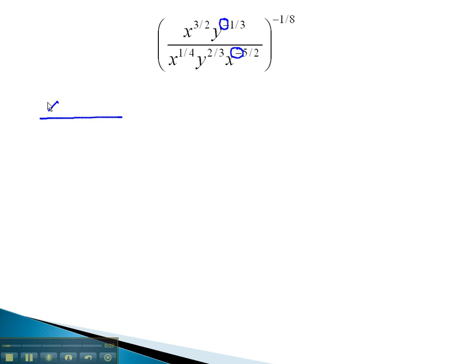As we do this, the x to the 3-halves stays. The y to the negative 1-third moves to the denominator as y to the positive 1-third.